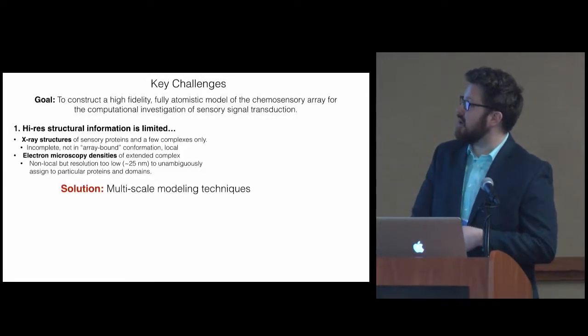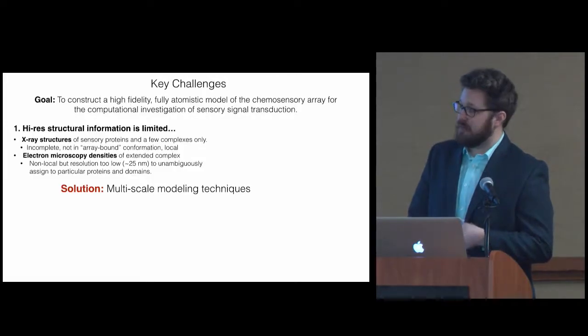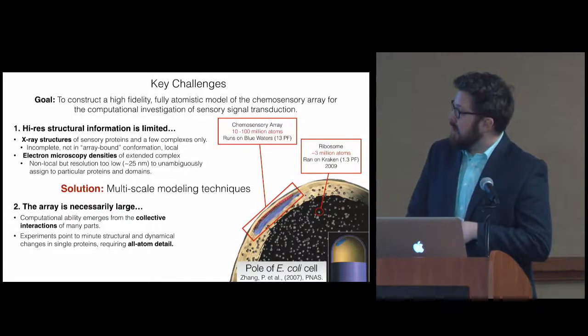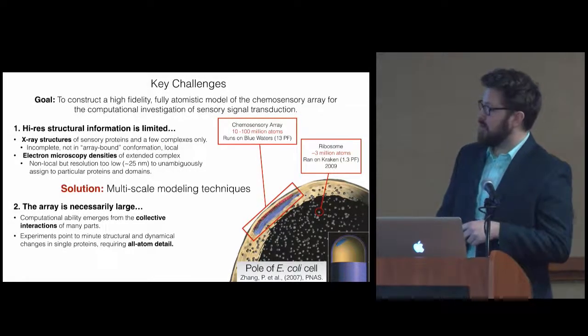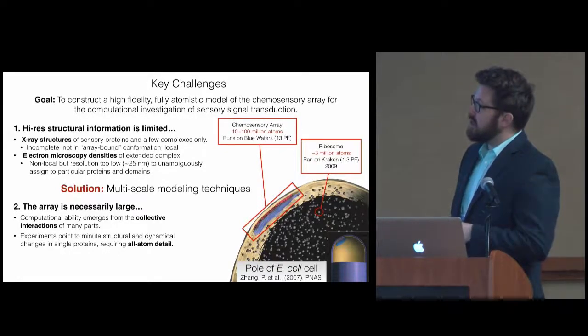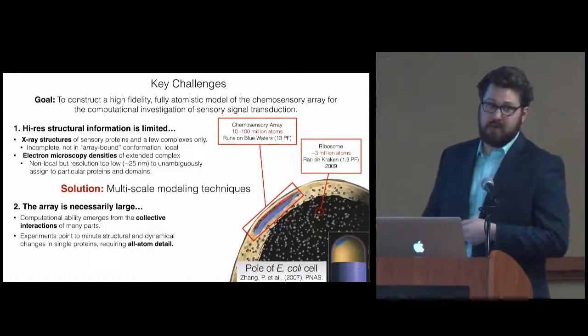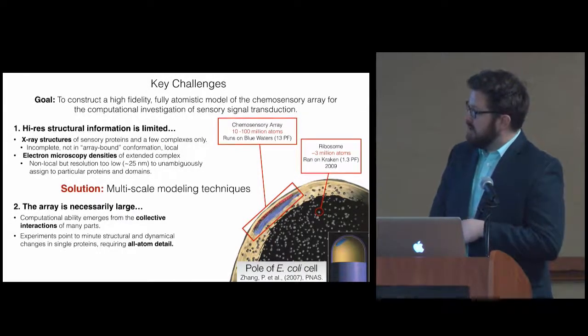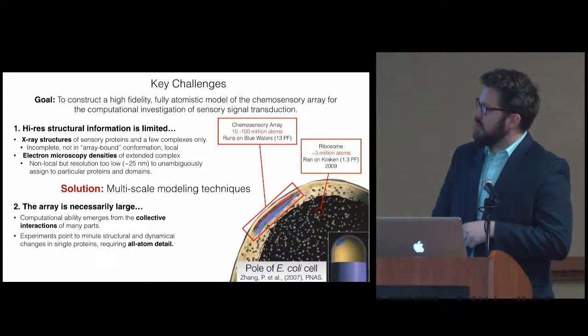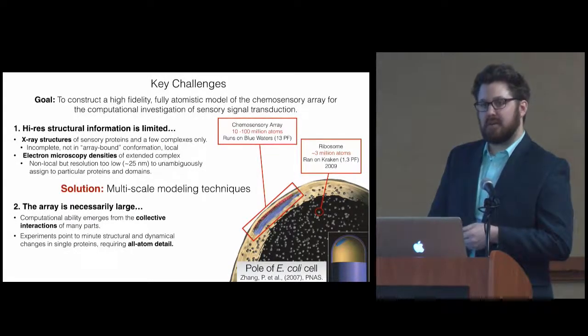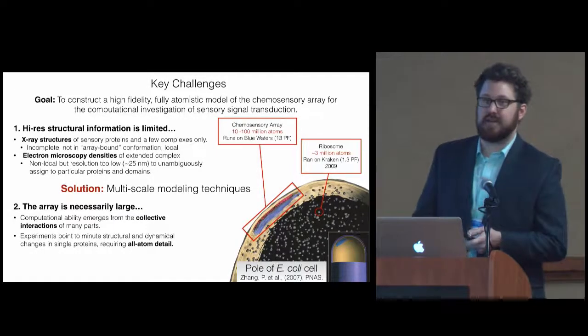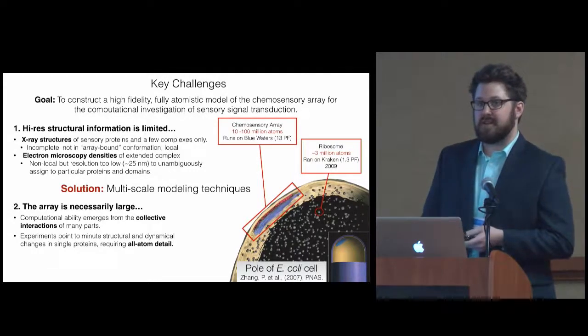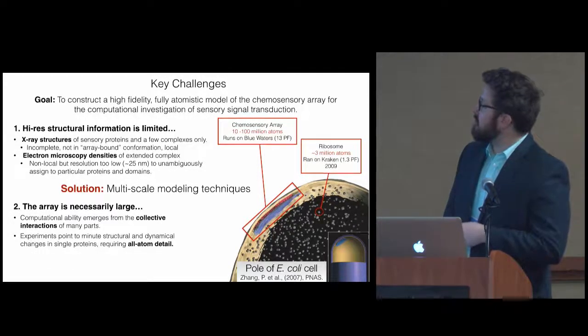A solution here is multiscale modeling techniques with VMD and NAMD, which I'll describe in more detail. The other is that the array is large, it's necessarily large. Because we wanted to get at some of this cooperativity, we need the collective interactions of many parts. We need to simulate many of these proteins. In addition, because the existing experiments looking at signaling in single proteins show minute structural and dynamical changes, atomistic detail is required to really get at some of the finer details of these mechanisms.